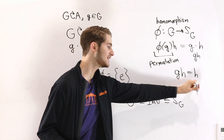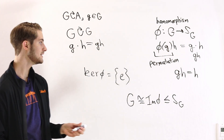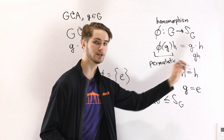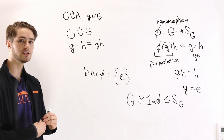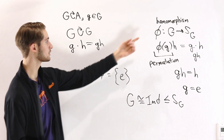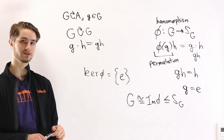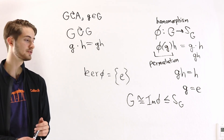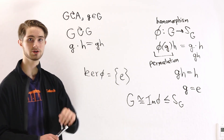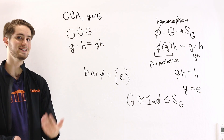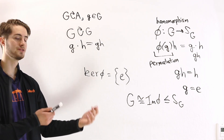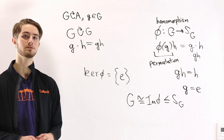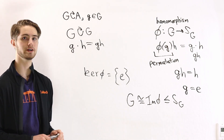Another consequence of every element having an inverse is that the only way we get the identity permutation — the permutation that leaves h in the same spot — is if g equals E, because we can multiply by h⁻¹ on the right. That leads us to the conclusion that the kernel of this homomorphism is just the identity element. So when we apply the first isomorphism theorem, G mod the kernel of φ is just G mod {E}, which is the same as the original group, confirming that every group is isomorphic to a subgroup of a symmetric group.